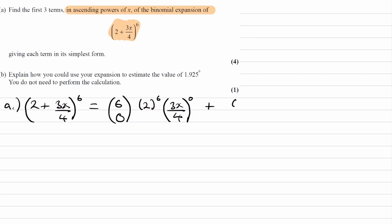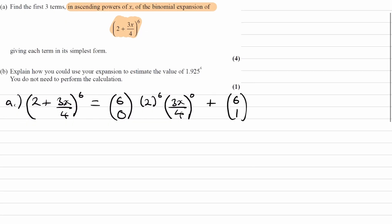With our next term, we increase our 0, so that increases to 1. 6 choose 0 becomes 6 choose 1. We decrease this power and increase the power for 3x over 4, so it's multiplied by 2 to the power of 5 times 3x over 4 to the power of 1. Do the same thing again. 6 choose 2 now, so 1 has increased to 2, 2 to the power of 4, and then finally 3x over 4 to the power of 2.